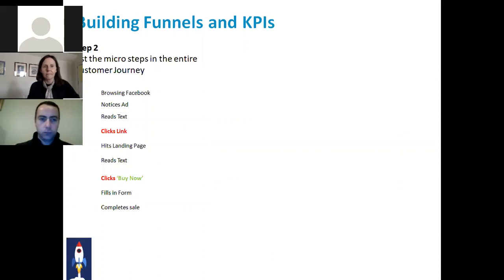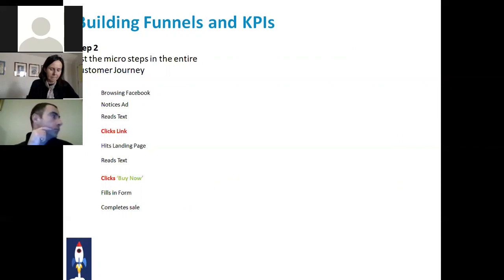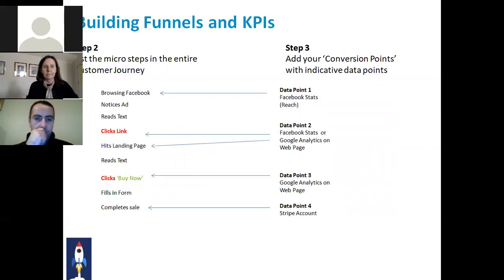Step two: list the micro steps in the entire customer journey. Go back to your marketing framework and that entire actions list, copy and paste it all into an Excel sheet down the left-hand side. In this case we're saying she's browsing Facebook, she notices an ad, she reads the text, she clicks the link, she hits the landing page, she reads the text there, she clicks the buy now or join now button, fills in the form, and then completes the sale. Then the third step: once you've identified those micro steps, add your conversion points with indicative data points.